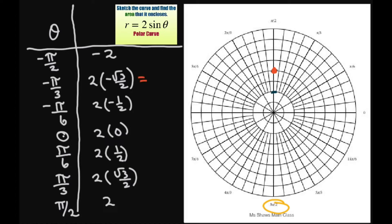At negative pi divided by 3, this is going to be negative square root of 3. So there we have that. But that's about 1.73. So that's going to be close to 2. So go up here, close to 2.